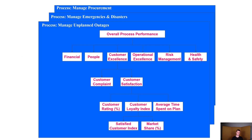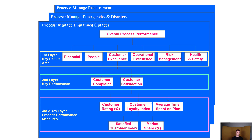In fact, those tables are usually based on a wider view. For example, a process of managing unplanned outages would have overall performance defined by financial measures, customer excellence, and so forth. Under customer excellence, we would have customer complaints and customer satisfaction; under customer satisfaction, customer ratings and customer loyalty indexes. This is quite a wide picture, not something we will focus on in this course. However, it is very relevant to be aware that this level of performance dashboards exists. I would summarize the strategic level as an aggregation of the individual business process performance indicators.